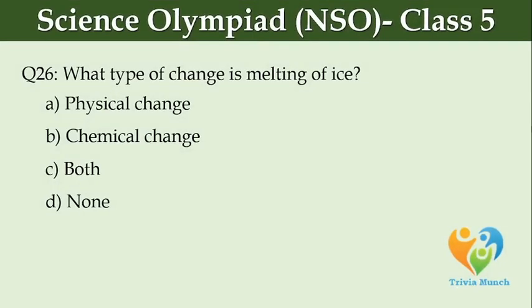What type of change is the melting of ice? Option A, physical change. Option B, chemical change. Option C, potential change. Option D, none.